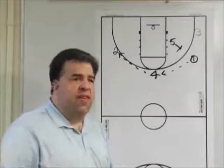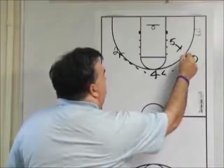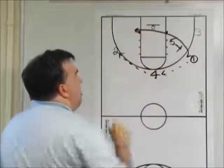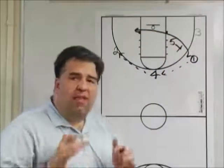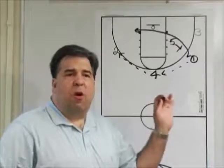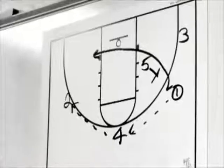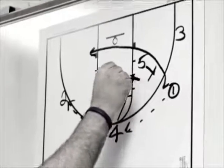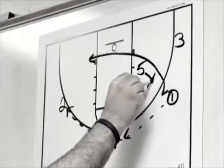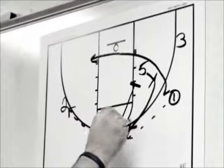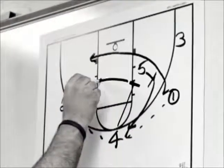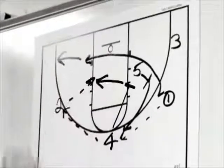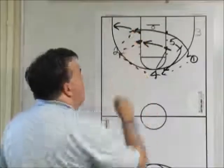One is going to cut off of five — we want him to cut shoulder to shoulder and come down into this area. Obviously if one is open on that cut, we're going to get the ball there. As soon as four makes that pass, four is going to be looking for five's defender and set a screen. Five is going to come to the top off of that screen, and four is going to immediately roll towards the basketball. We're going to look inside to either hit four or to hit one on that cut.